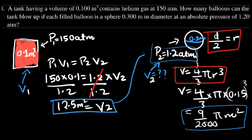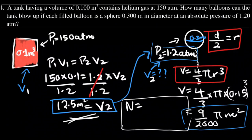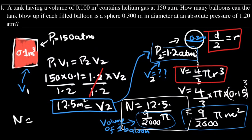So 12.5 meters cubed is the volume of gas at balloon pressure. Now that we have the volume at this pressure, we can find the number of balloons. We divide 12.5 by the volume of each balloon, which is 9/2000 π. This gives us approximately 884 balloons.